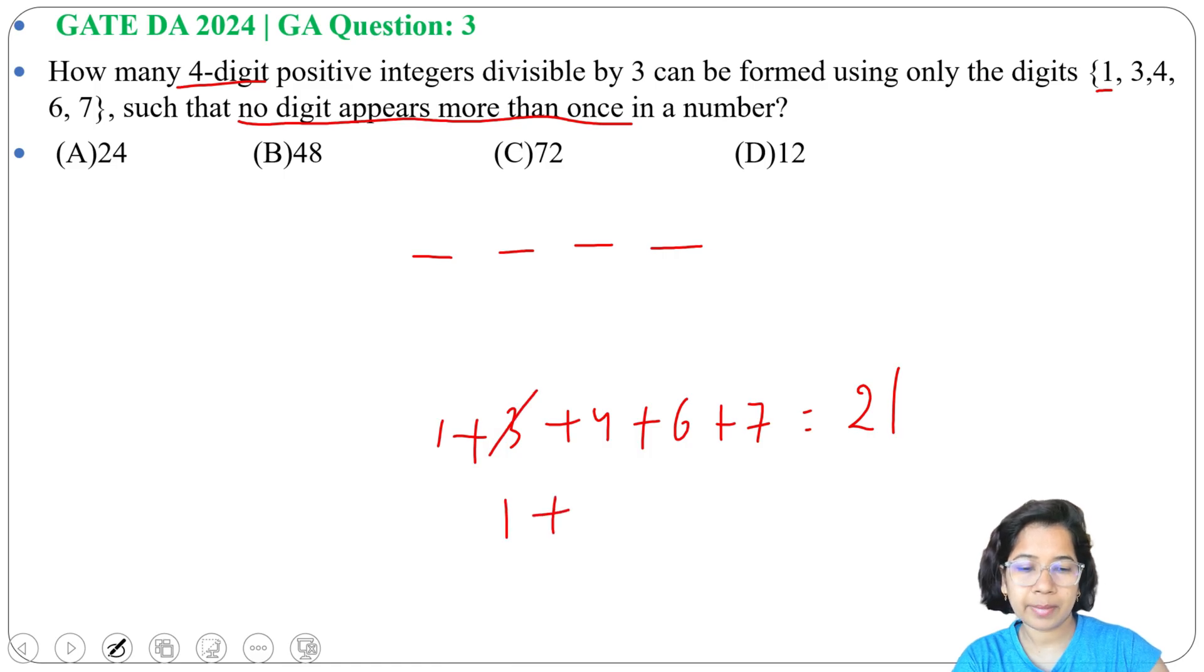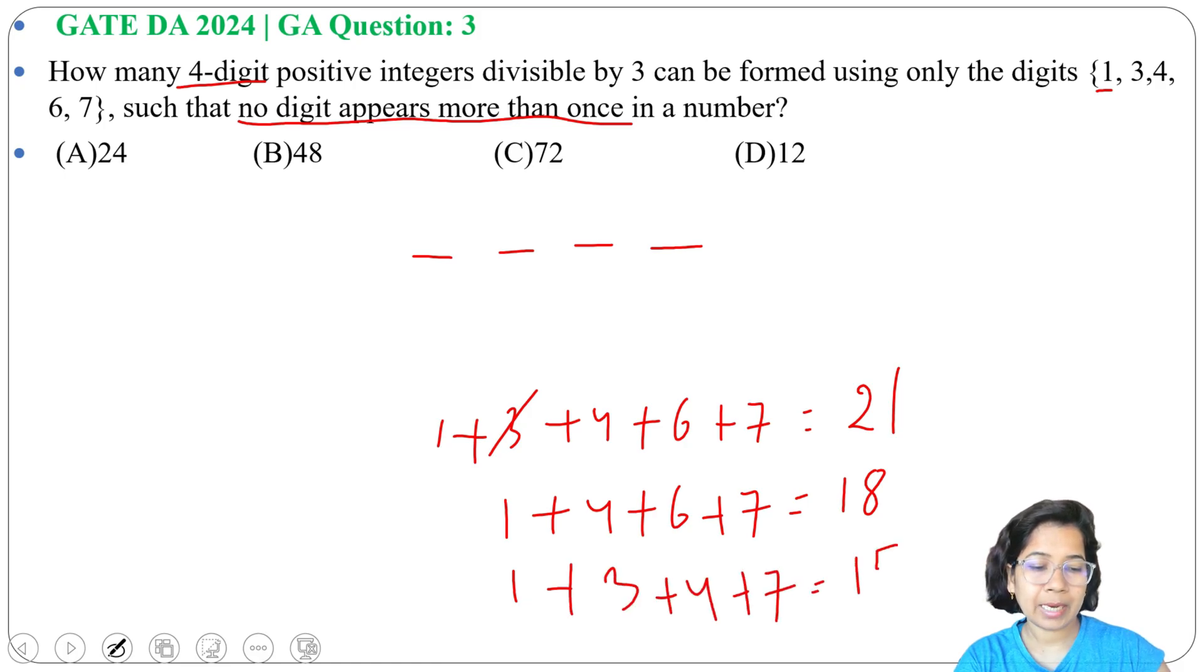So 1 plus 4 plus 6 plus 7 equals 18, and 18 is divisible by 3. So this 1, 4, 6, 7 combination can be divisible by 3. Next I will subtract 6 and include 3. So 1 plus 3 plus 4 plus 7 equals 15, and 15 is divisible by 3.